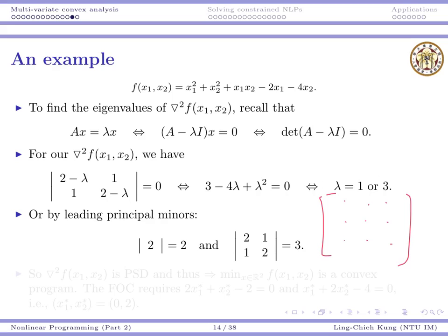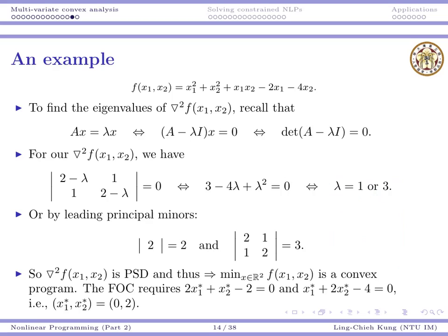In general, if you have a 3-by-3 matrix, you need to verify 3 submatrices and show that their determinants are all non-negative. Going back to our problem: we have shown the Hessian is positive semi-definite, so the function is convex. Therefore, minimizing the function can be done by the first-order condition — both partial derivatives must be zero. Solving these two equalities, we get the optimal solution (0, 2). If you check the figure, our optimal solution is indeed at (0, 2).